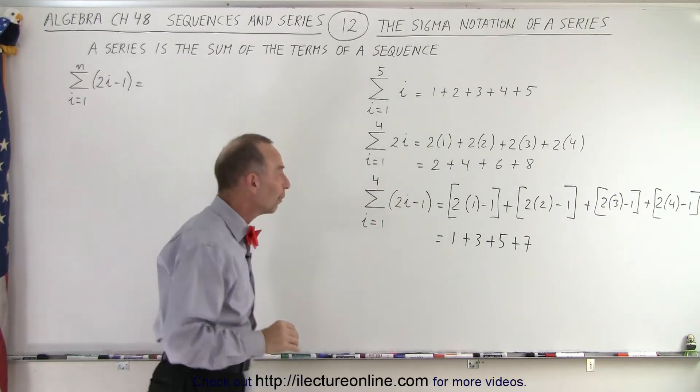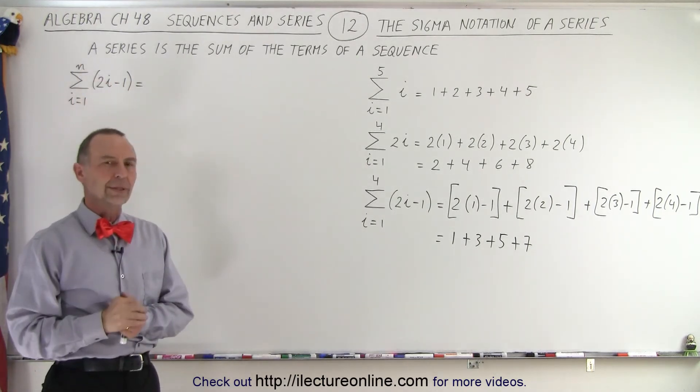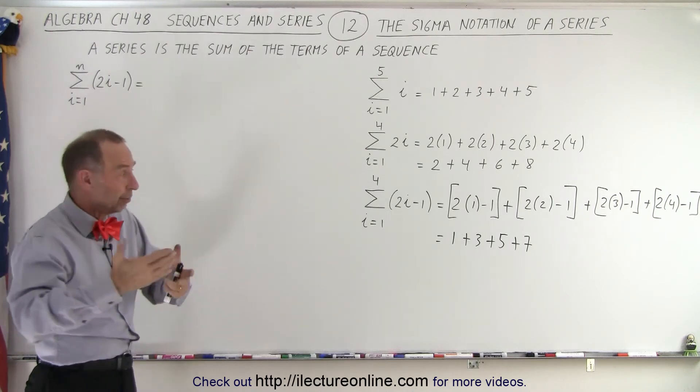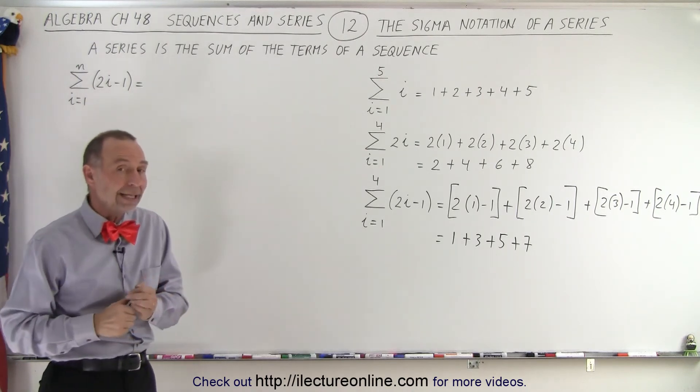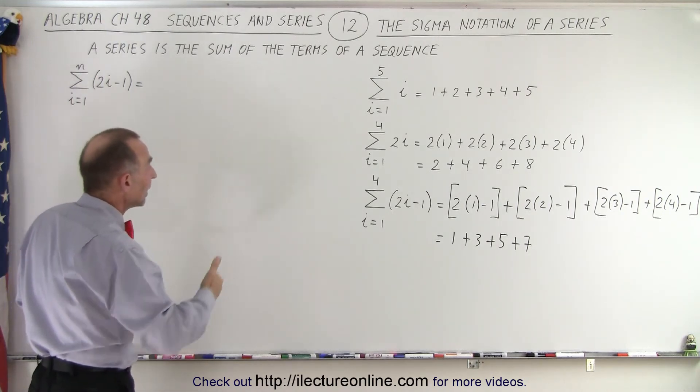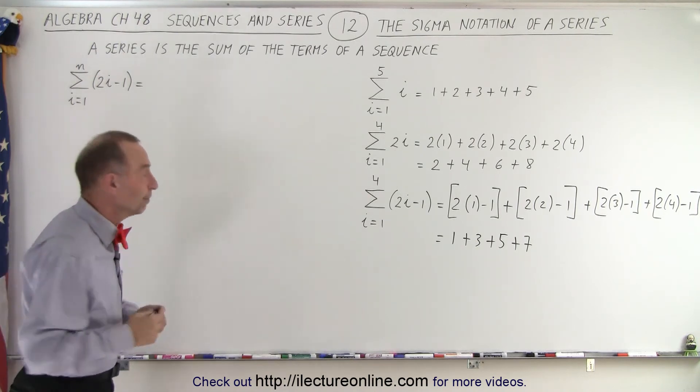And then here we have one more. What if we have the upper limit as n instead of a number? How do we deal with that? Well remember that n was just any number, any value for i, any integer. It could be anything so what we're going to do here is we're going to plug that in and at the very last term we replace i with an n instead of a number. So this is how it goes.